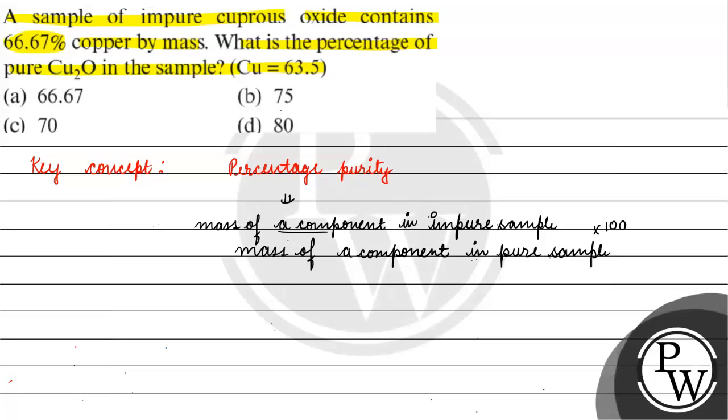If we want to find percentage purity of Cu2O, what will happen? It will be mass of copper in impure sample by mass of copper in pure sample into 100.